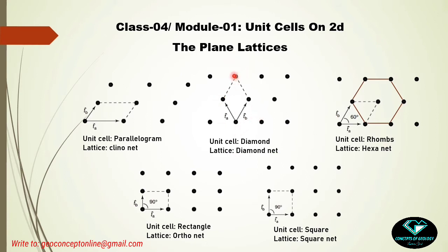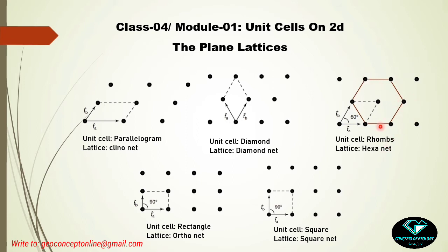In the diamond net, ta and tb are equal — just as all arms of a square are equal — but the angle between them is a general angle, which may be 30°, 40°, 50°, or any value. The third unit cell shape is a rhombus, again a modified square, but here the angle between the two arms is specifically 60° only. Since ta equals tb and the angle is 60°, this lattice is called the hexanet, because combining three rhombuses creates a hexagon.